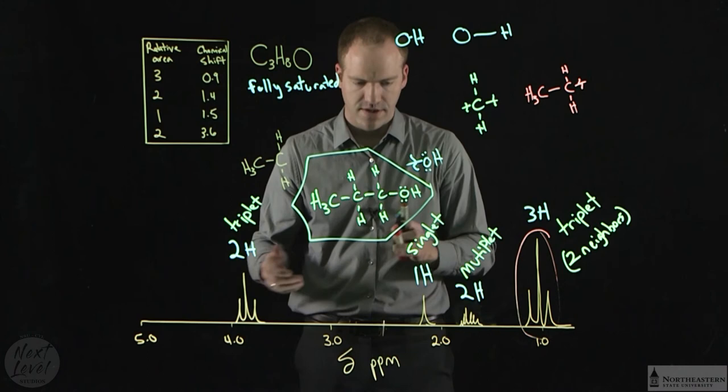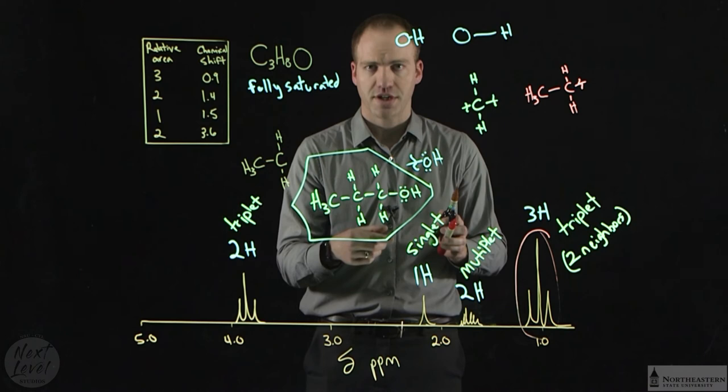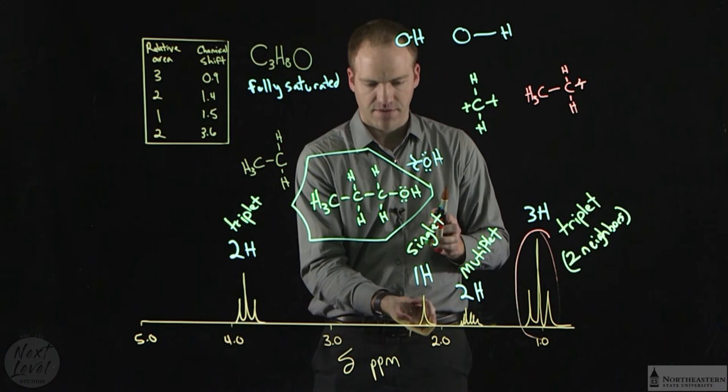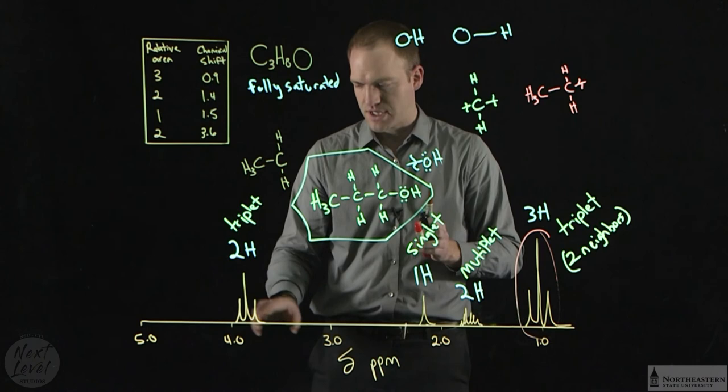The next two signals seem like they should be switched. But again, going back to this, the proton that's directly attached to the oxygen tends to actually be a little shielded from being near the oxygen. And that's why our singlet for the hydroxyl proton shows up here around two, and the CH2 signal shows up a little bit farther down to four.